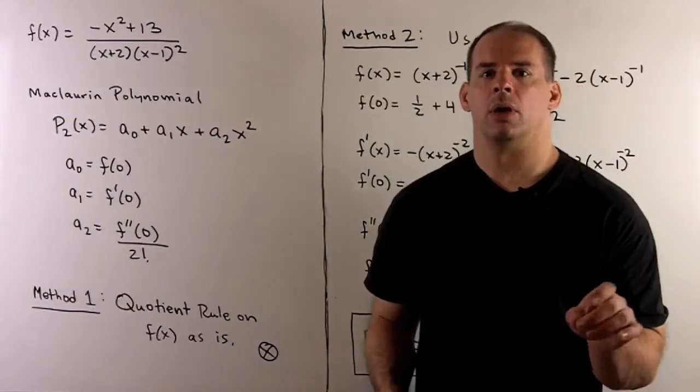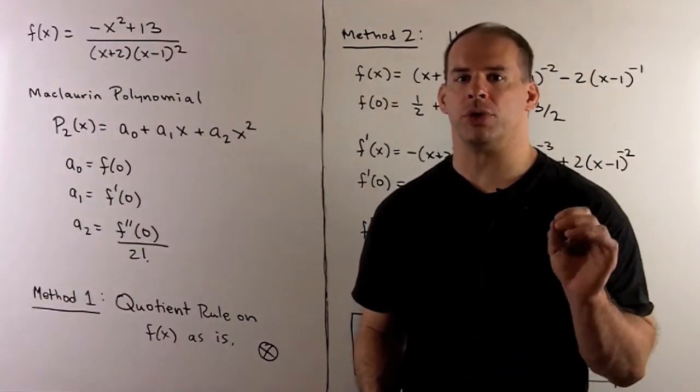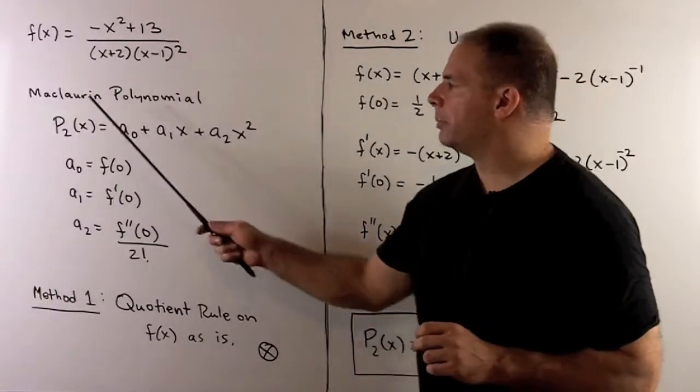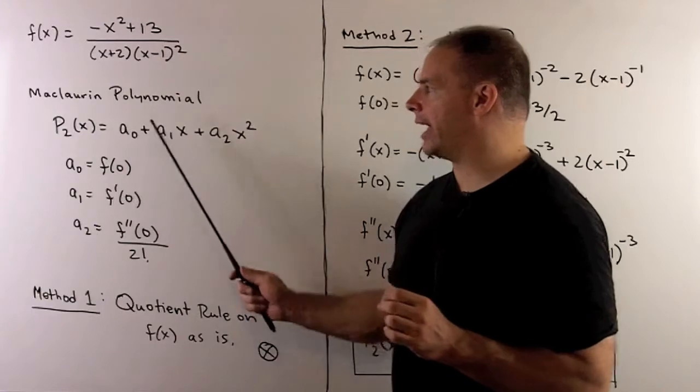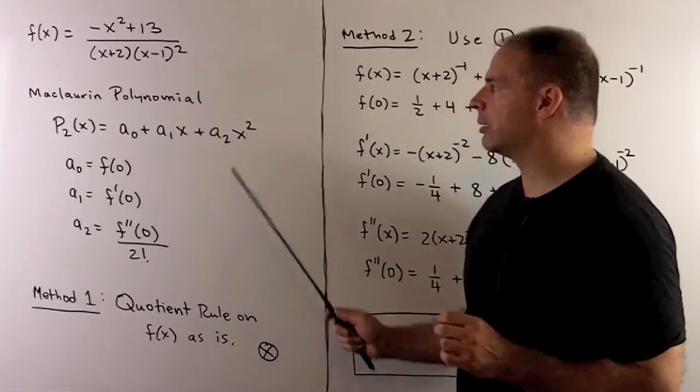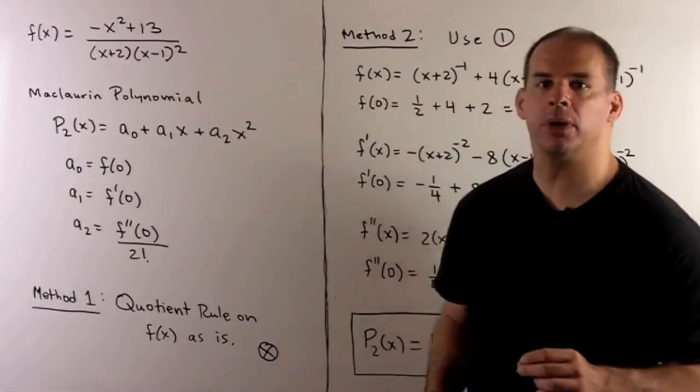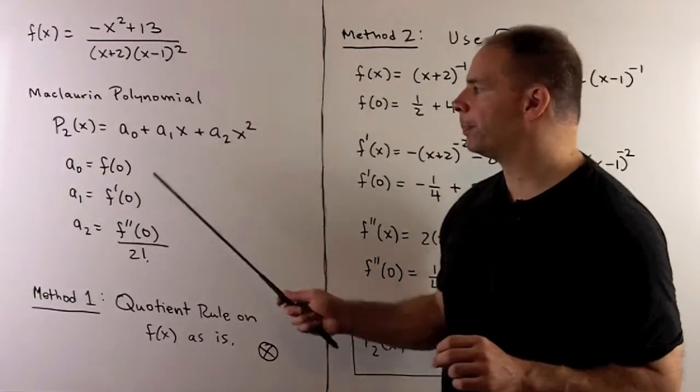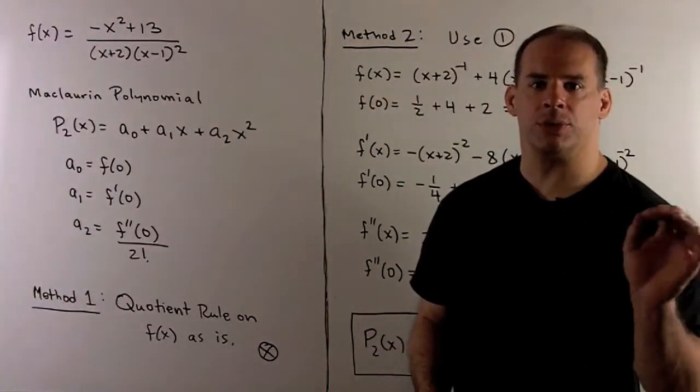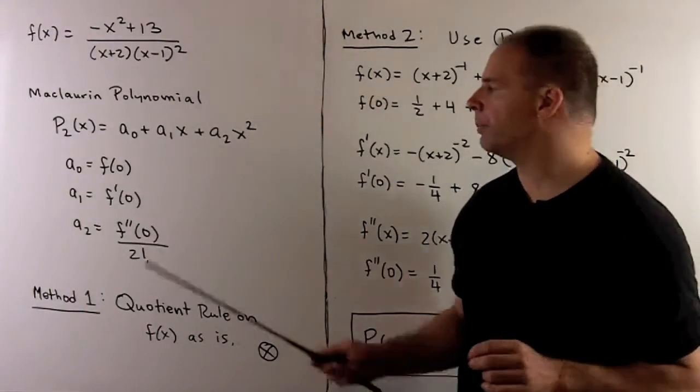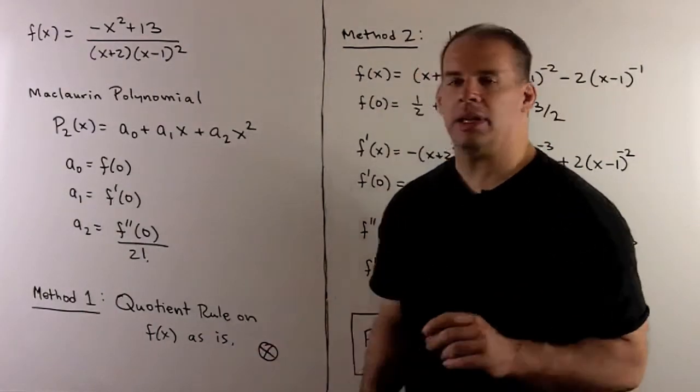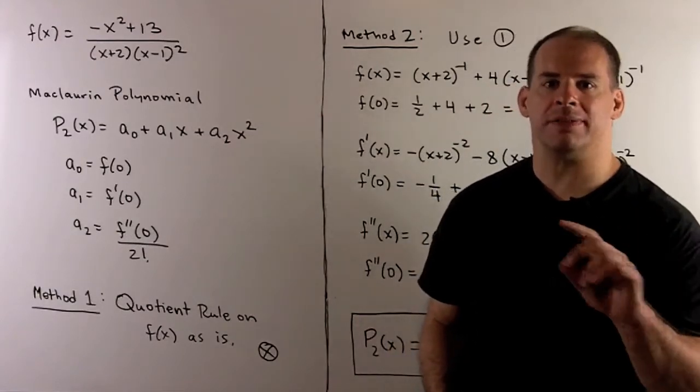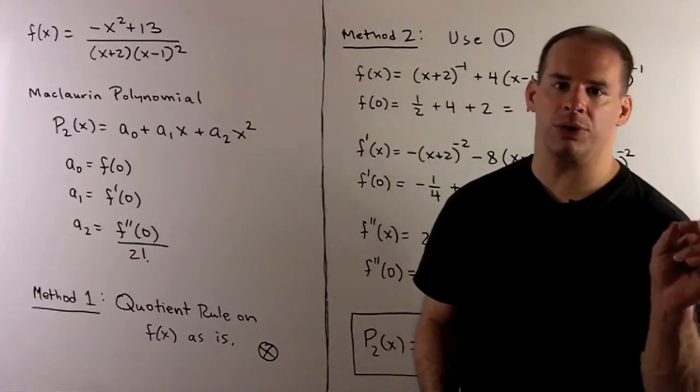Now I want to find the Maclaurin polynomial, degree 2, for f(x). The recipe that we'll use: p₂(x) is equal to a₀ + a₁x + a₂x². Where a₀ is equal to f evaluated at 0, a₁ is equal to first derivative of f evaluated at 0, and a₂ is equal to the second derivative of f evaluated at 0, divided by 2 factorial, which is just 2.